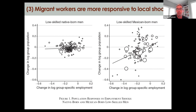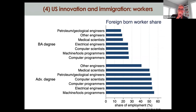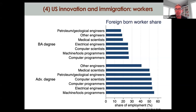Thinking not just about the static gains from immigration in terms of addressing long-run differences in labor productivity, there's also a sense in which immigration plays a very important role in the global innovation process. A lot of that innovation happens in the United States, and immigration plays a central role. On the worker side, if we look at occupations that account for a disproportionate share of patents produced in the last 20 years, immigrants are over 40% of the labor force when we look at those with advanced degrees, and over 20% when we look at those with just a BA.